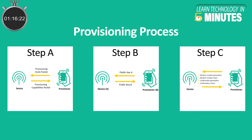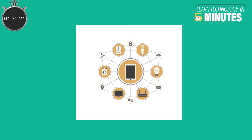Now let's look at how BLE Mesh works. The first process of any BLE Mesh network is to add devices to the network — this process is called provisioning. The device which helps a new device get connected is called a provisioner. Each device connected to the mesh network is called a node, and nodes use messages to communicate with each other.